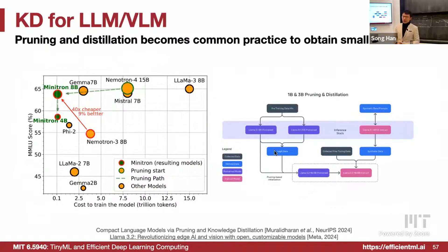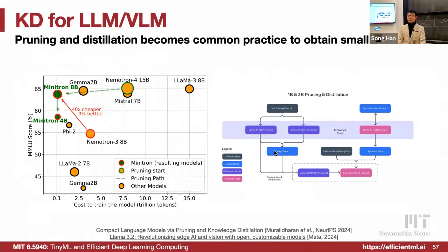The student with attention transfer versus without attention transfer: with attention transfer the attention map is very similar to the teacher's, while without transfer it's quite different. In addition to feature imitation, the transformer architecture gives us another opportunity to match the attention maps.